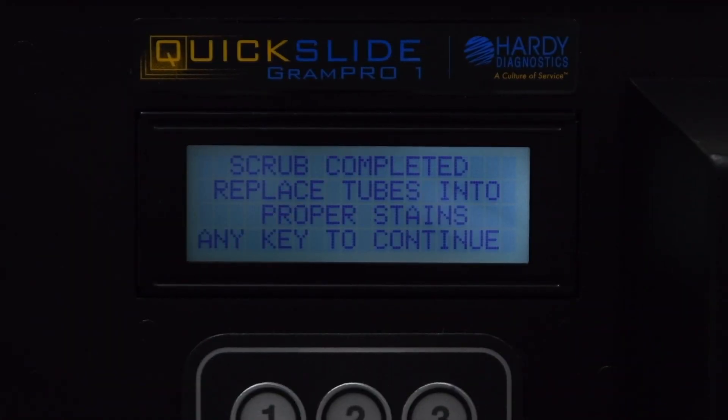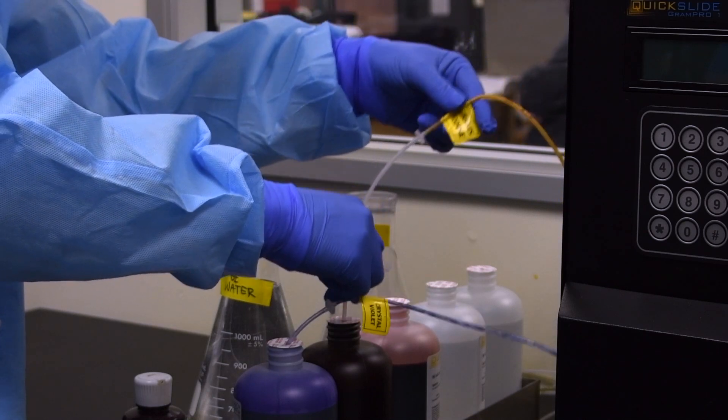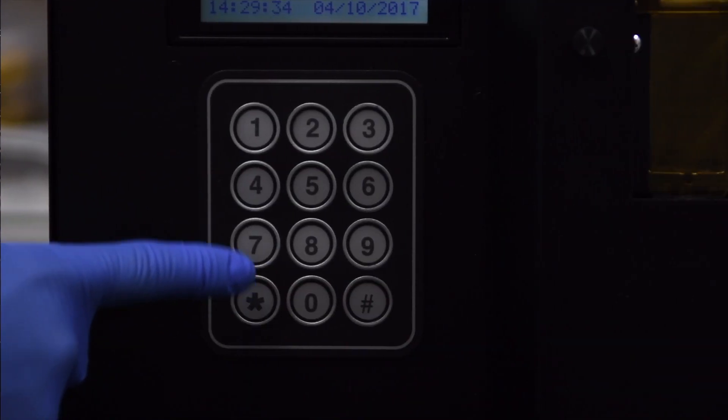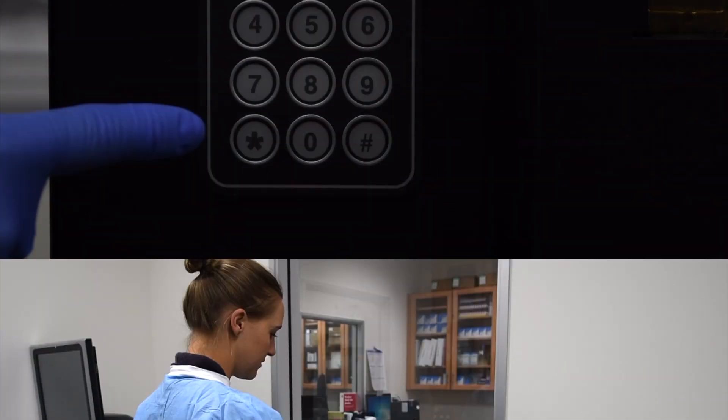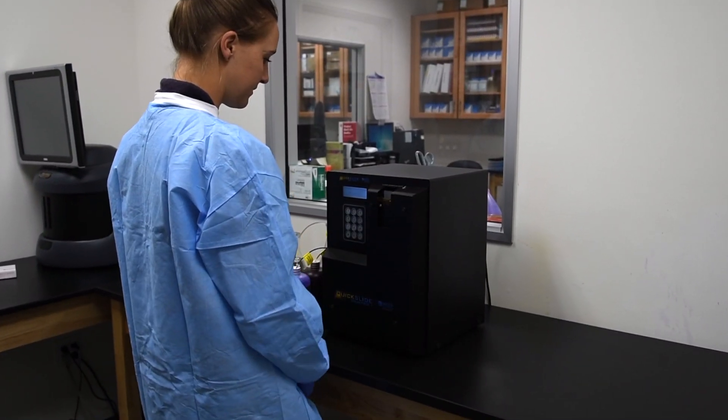When the scrub cycle is complete, place the cannulas back into their respective reagent containers, then press any key to continue. The lines will then be primed with reagents.